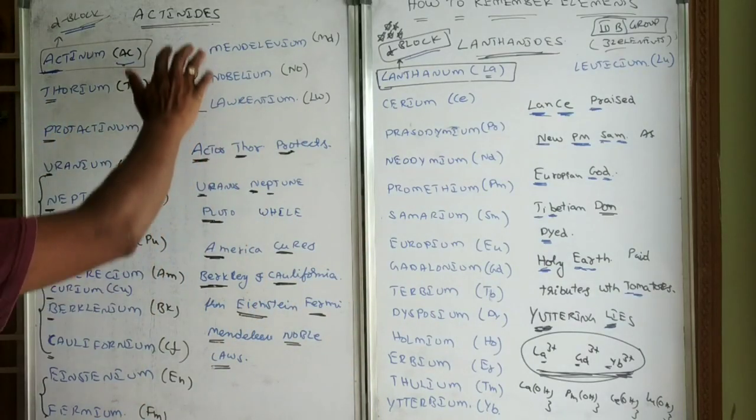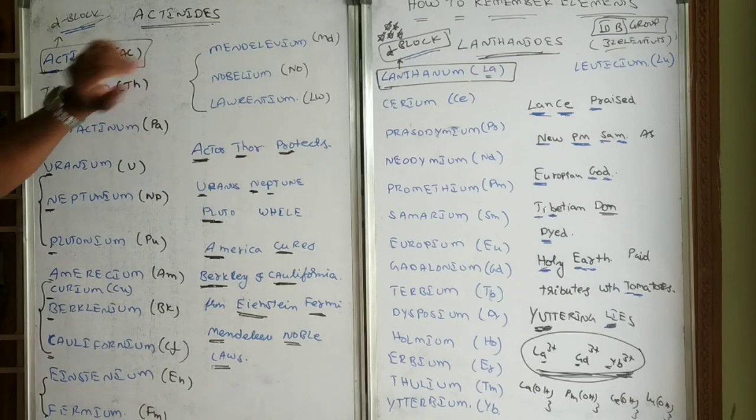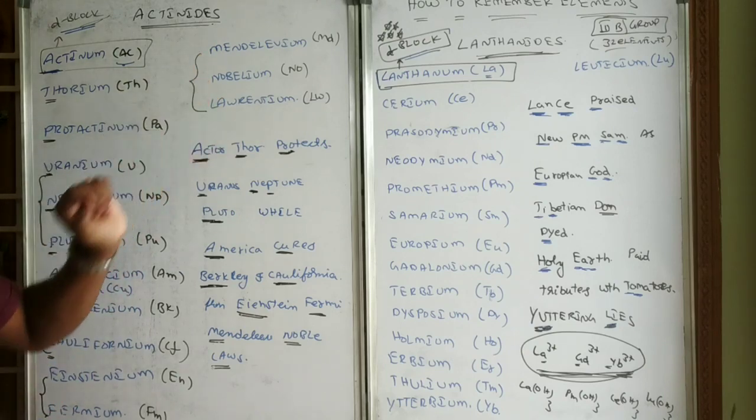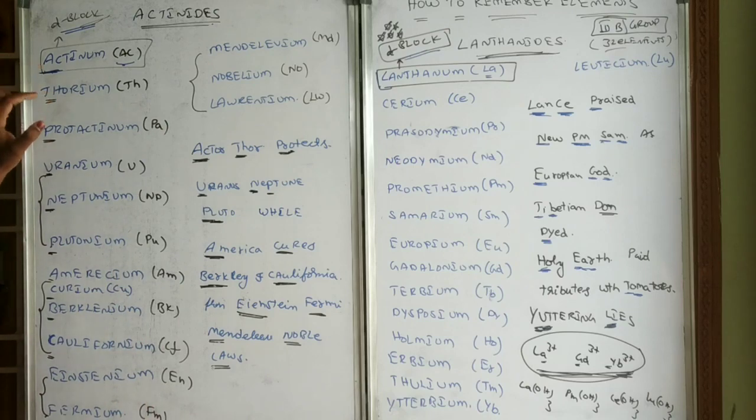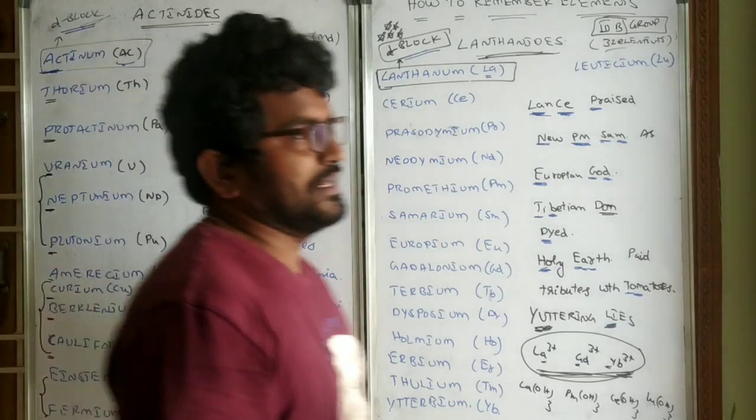Next, the other mnemonic for the actinides. The elements of actinide series are actinium, thorium, protactinium, uranium, neptunium, plutonium, americium, curium, berkelium, californium, einsteinium, fermium, mendelevium, nobelium and lawrencium.